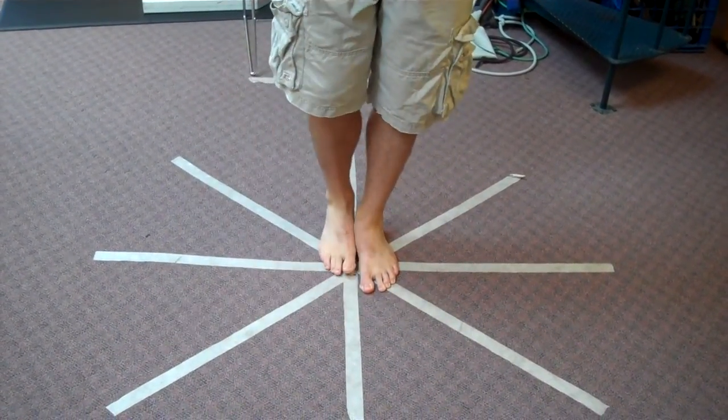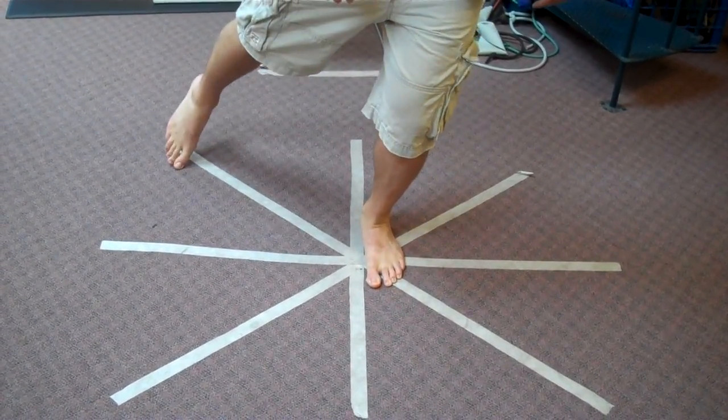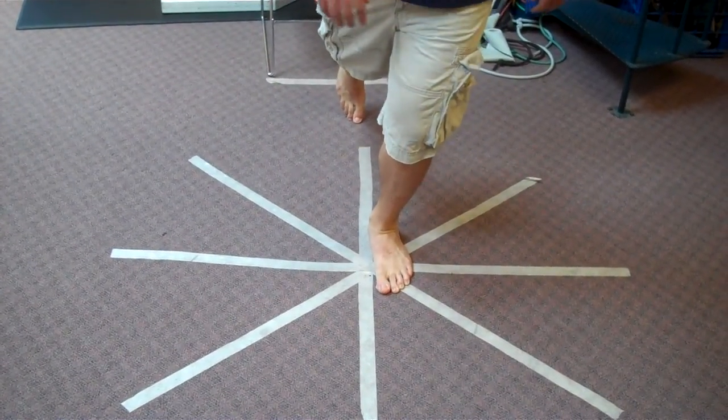So one in the front, one on the other side, one straight to the side, one back into the side, and then straight back. So there's five points of contact.